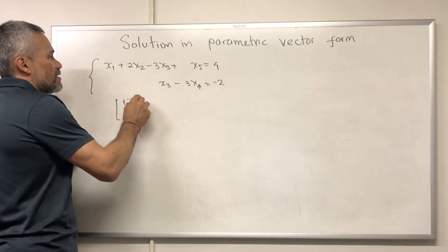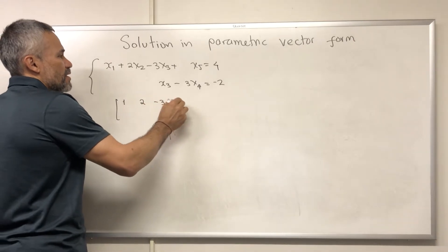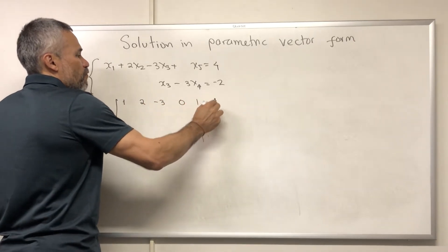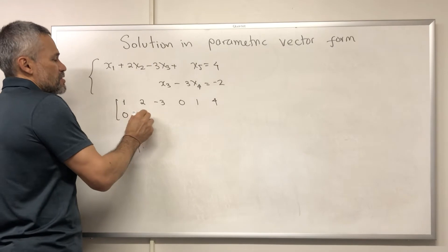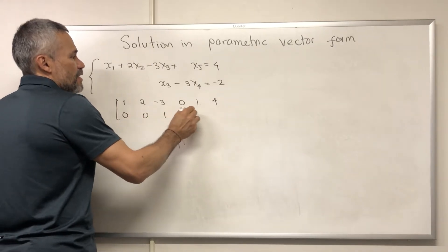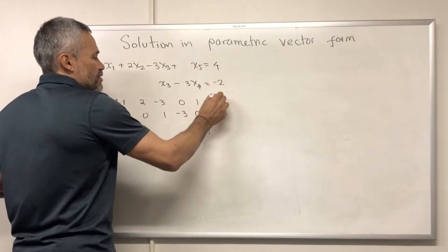the augmented matrix is the matrix 1, 2, negative 3, 0, 1, 4, 0, 0, 1, negative 3, 0, negative 2.